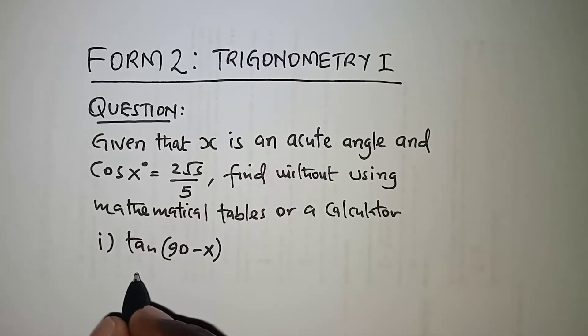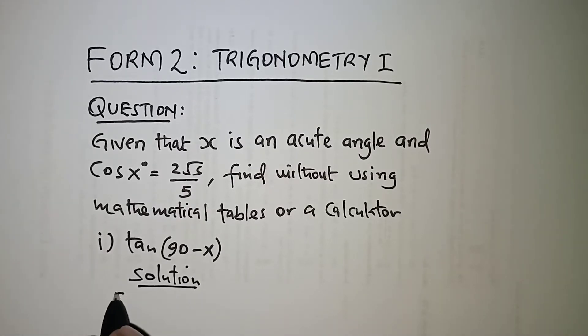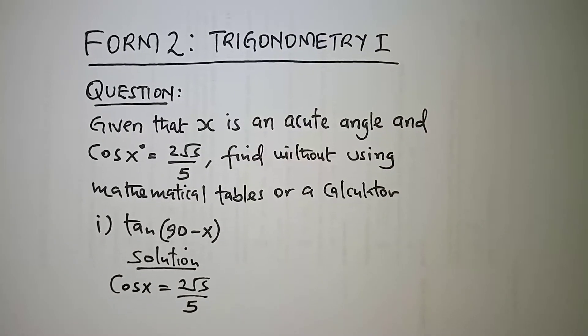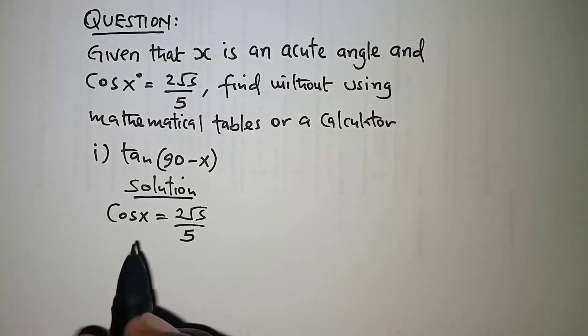So the solution to this, first of all we are given that cosine of x is 2 root 5 over 5 and the interpretation here will be from a right angle triangle.